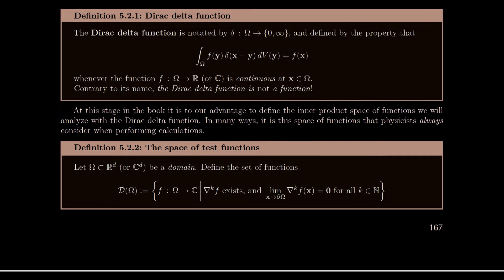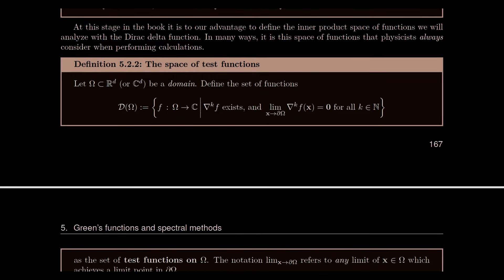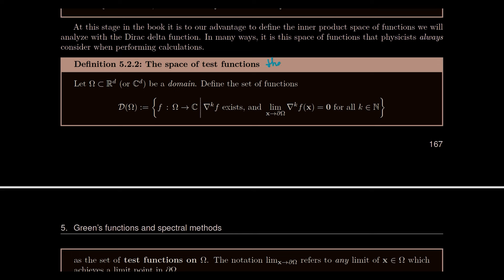Next is the definition of the space of test functions. This is the natural space of functions on which the Dirac delta and its first derivative, second derivative, and so on are well defined.